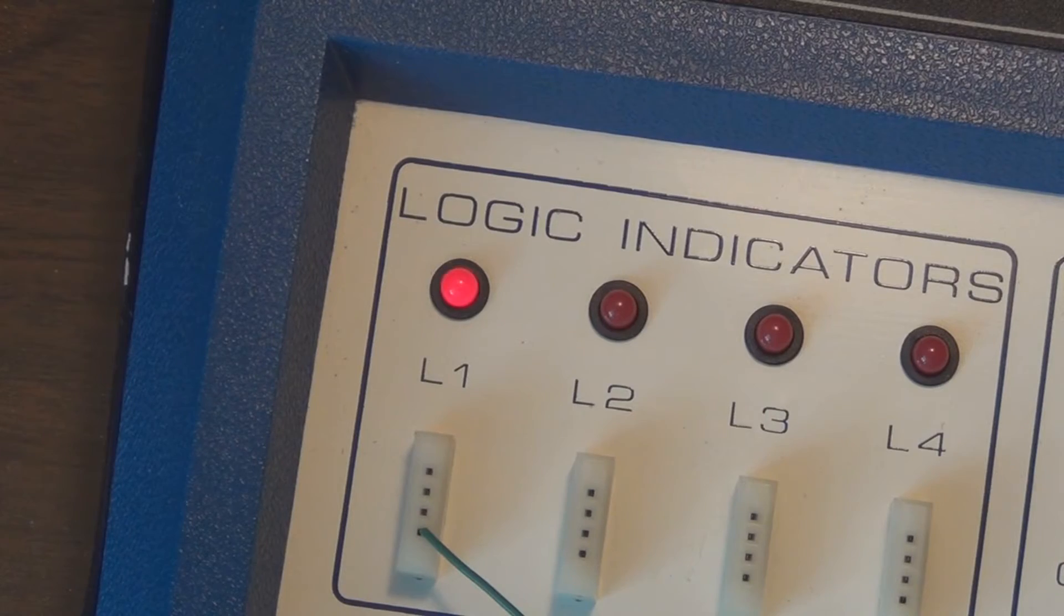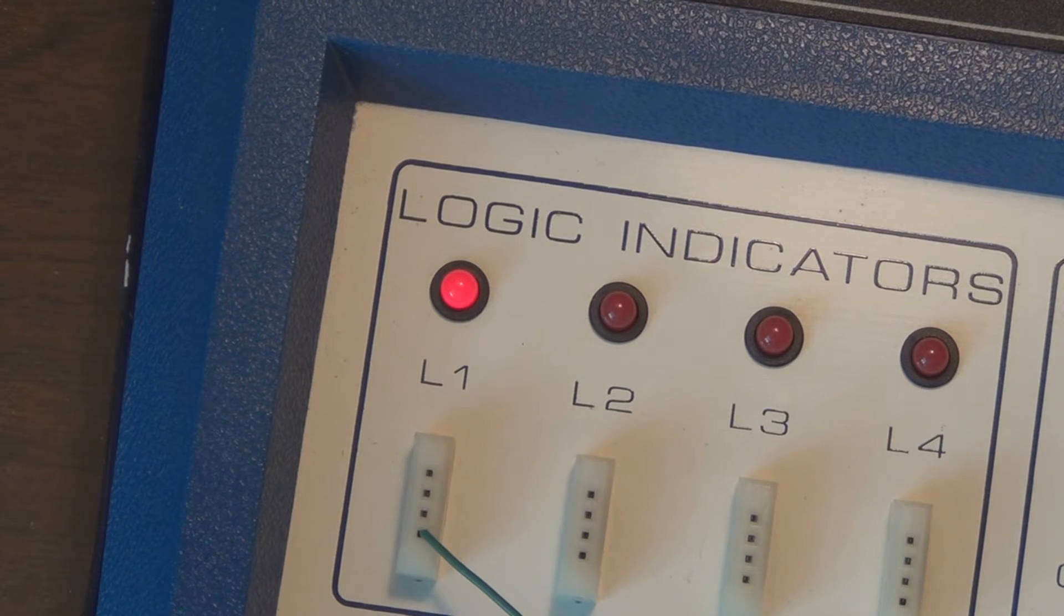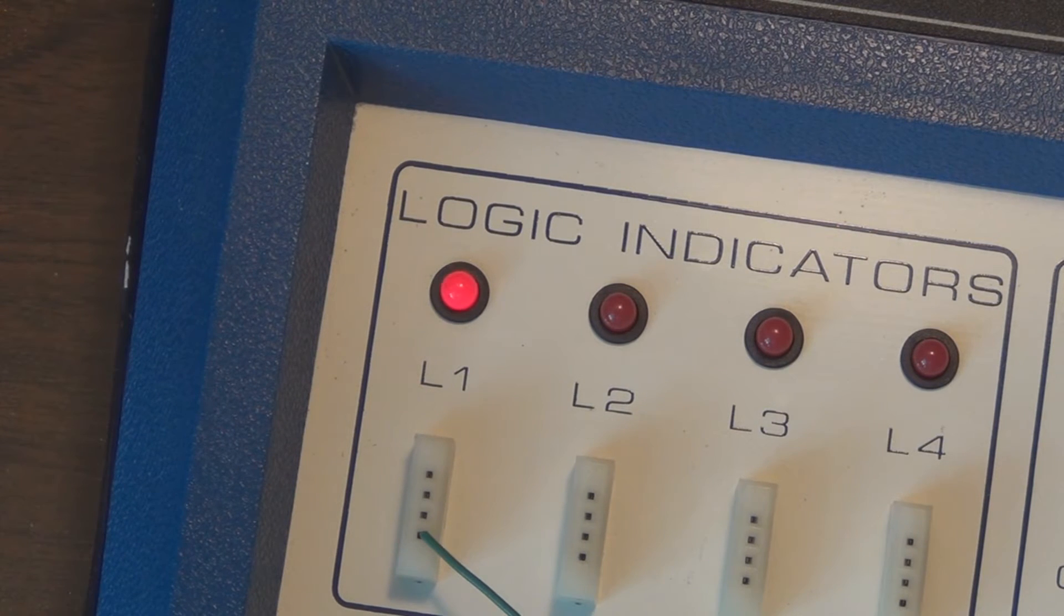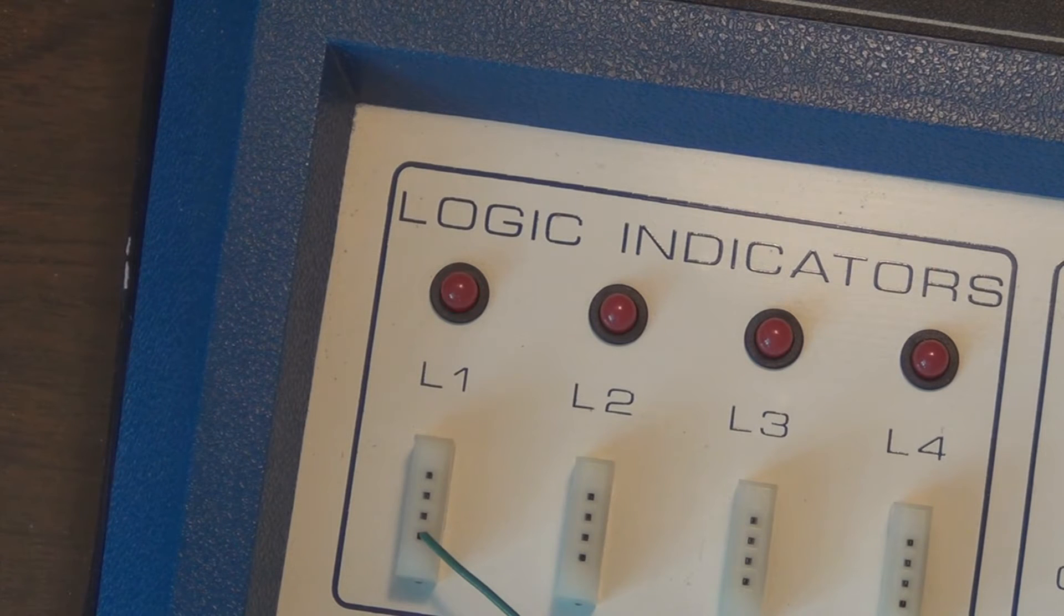You can see here is the one Hertz clock, and it's slow enough where you can see it blinking the LED on and off. If you were to look at that on an oscilloscope, you would see a square wave toggling between five volts and zero volts.